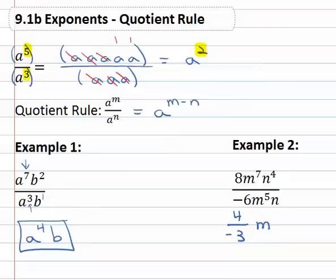And then for the m's, when we subtract the exponents, seven minus five leaves us with two or m squared. And on the n's, we'll subtract the exponents, four minus one is three. And so we have four over negative three, m squared, n to the third power.